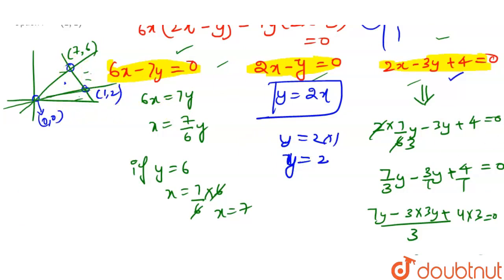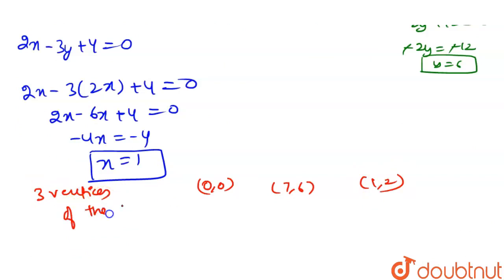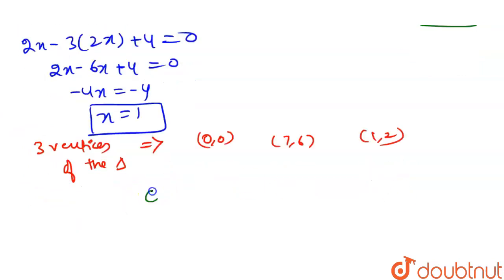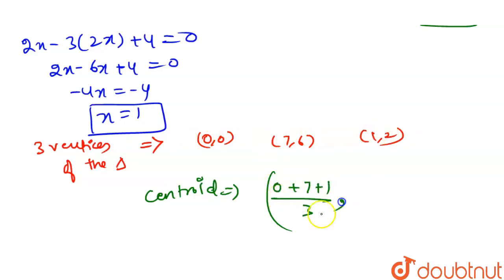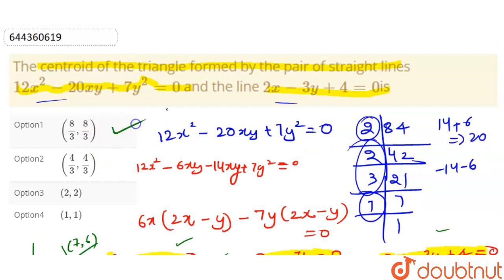We now have all three vertices: (0, 0), (7, 6), and (1, 2). The centroid is ((x₁+x₂+x₃)/3, (y₁+y₂+y₃)/3) = ((0+7+1)/3, (0+6+2)/3) = (8/3, 8/3). So the coordinates of the centroid are (8/3, 8/3), making option one the correct answer.